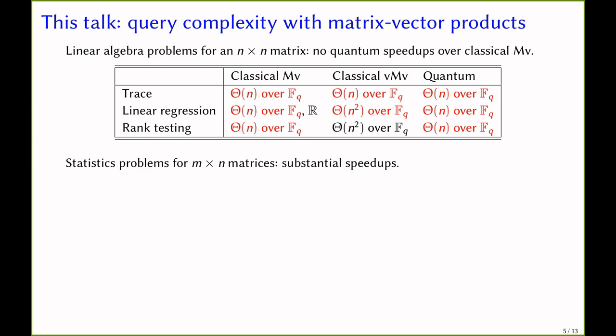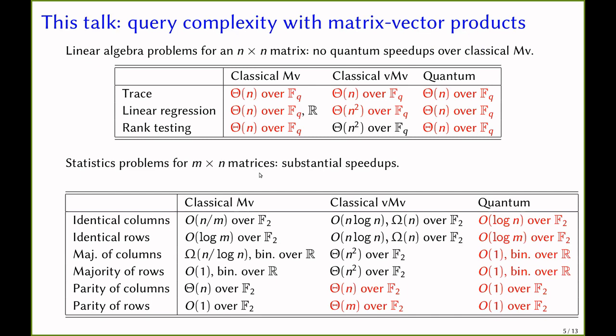On the other hand, we show that for some problems which we call statistics problems, quantum computers do provide substantial speedups. For example, for determining if there are two identical columns, there is an exponential speedup. And also, for majority of columns and parity of columns, we show that a constant number of queries is sufficient.